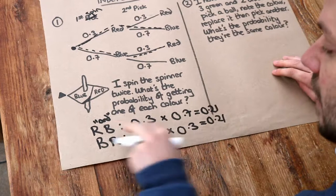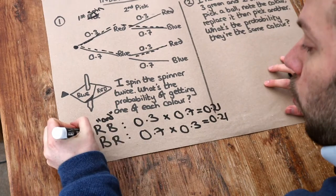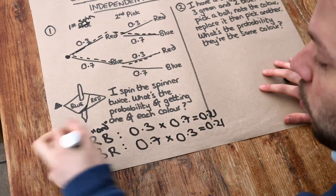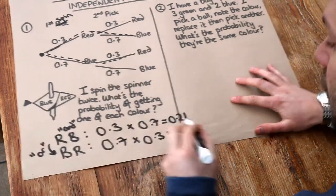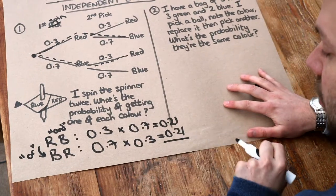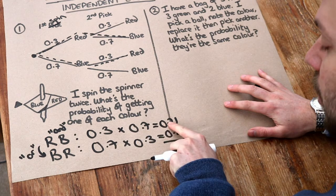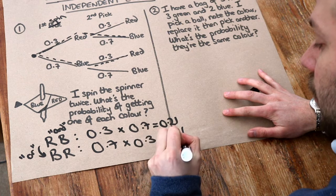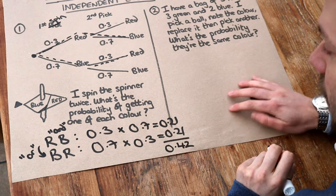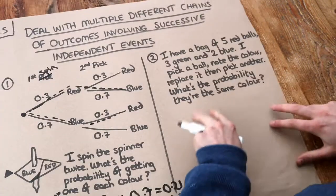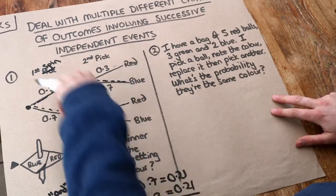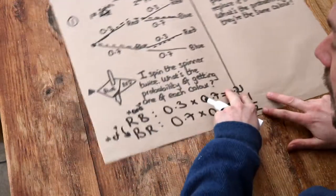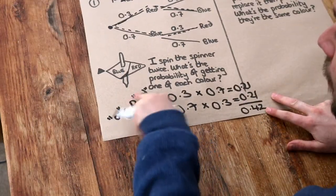Now we want the probability of getting red-blue or getting blue-red. In probability, the word 'or' means we add them. So we add those two probabilities together, giving us 0.42 — that is the final answer. This second question is just to demonstrate that we don't need a tree, and if you don't have one there's no need to draw it out. We can just use this principle of listing out the outcomes first.